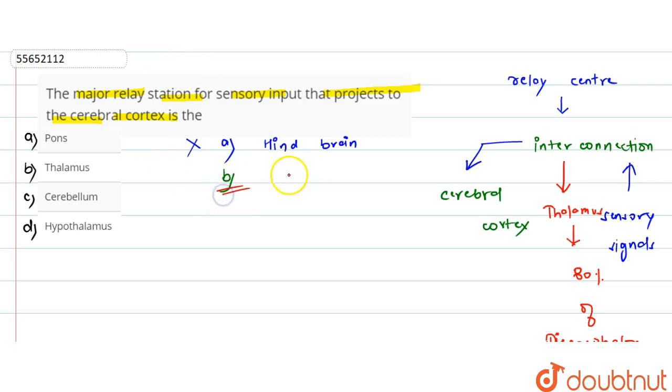Next, we have given thalamus, which is present in the forebrain region. This is part of the diencephalon. So this is correct. This is our answer.